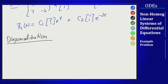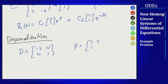For diagonalization, I need the matrix P built on the eigenvectors and D from the eigenvalues. I'll choose D = [-2, 0; 0, 1] and P = [1, 2; 1, 1], with the eigenvectors in the same column order as the eigenvalues placed in D.